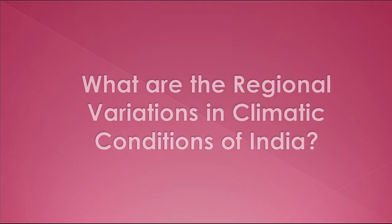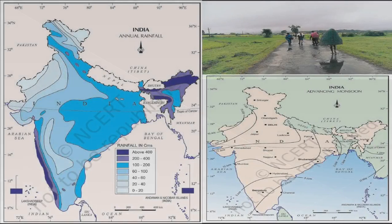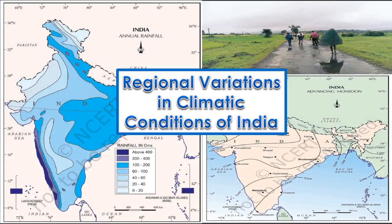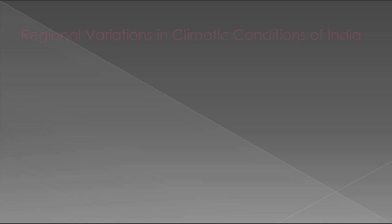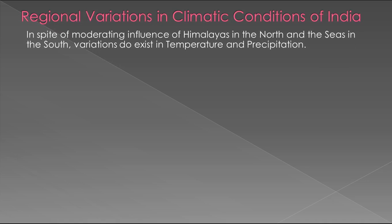Today's question is: what are the regional variations in climatic conditions of India? In spite of the moderating influence of the Himalayas in the north and the seas in the south, variations do exist in temperature and precipitation.